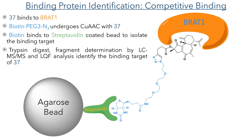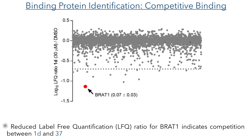After washing away the other cell contents and isolating the beads, the protein was subjected to a trypsin digest and the fragments were identified using LC-MS/MS. Label-free quantification analysis was then carried out to identify the binding protein. This technique looks at the spectral counts of mass spec data and compares them to data of known proteins to identify unique fingerprints.